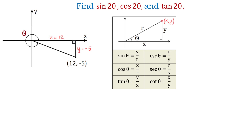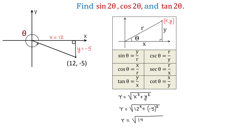According to the Pythagorean theorem, the hypotenuse r equals the square root of x squared plus y squared. Then r equals the square root of 12 squared plus negative 5 squared. Then r equals the square root of 144 plus 25, which makes the square root of 169, and this equals 13. So now we can write that r equals 13.